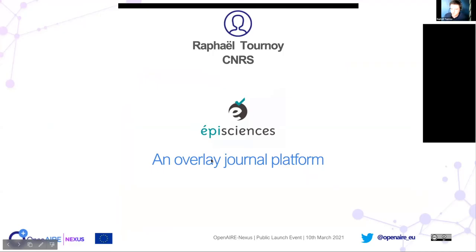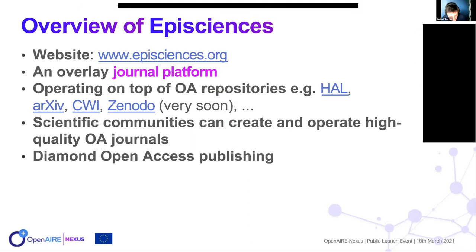I'm Raphael Tournois and I work for the Episciences platform, which is an overlay journal platform. What is an overlay journal? It's a journal whose content is hosted on open archives. For Episciences, we operate on top of open access repositories such as arXiv, HAL, and very soon Zenodo.